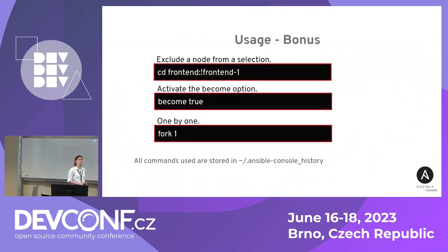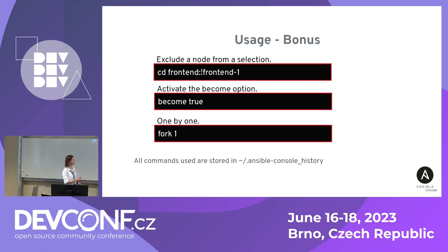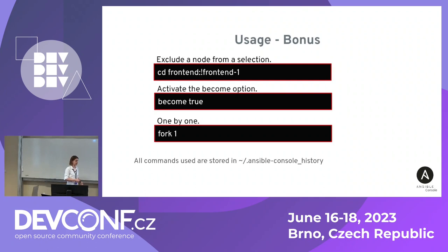Let's go to some bonuses — quick highlights I personally like. You can exclude a node from the selection, which is really handy if you want to debug all nodes except one you're confident about. You can use the become option — be careful with that, but you can. You can also trim the number of forks used: if you want execution one by one with no parallelization, use fork 1; if you want everything in parallel, use many forks. And the history of your execution is right here with Ansible console history, so you can always check what was done.